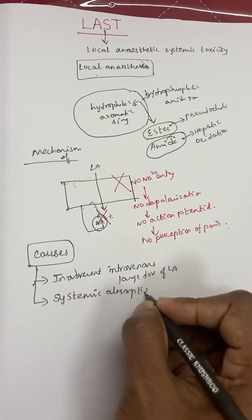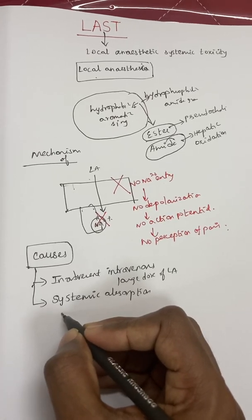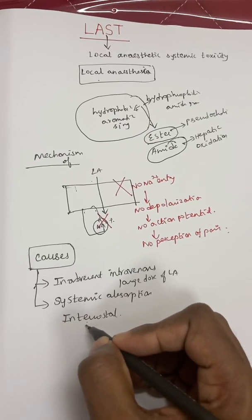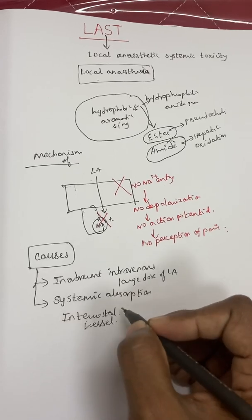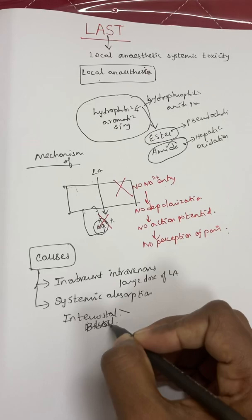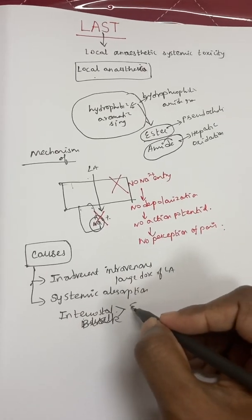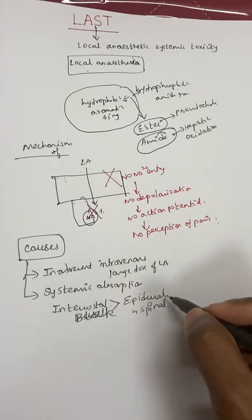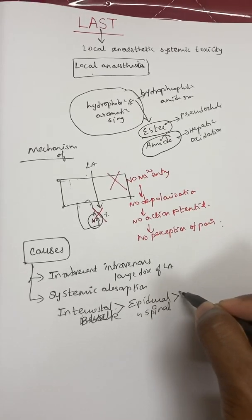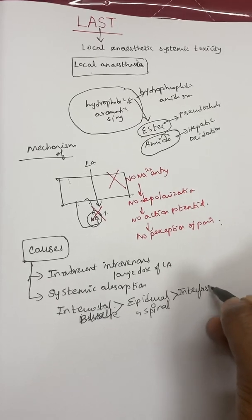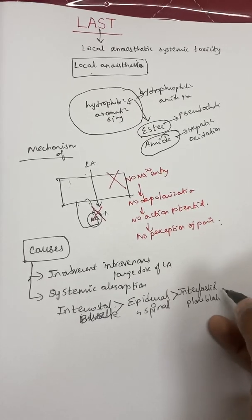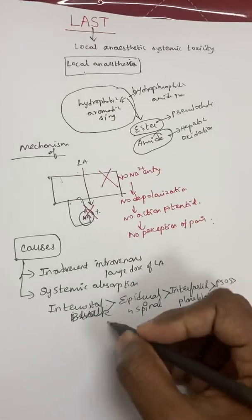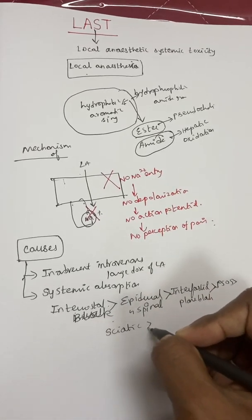Systemic absorption varies by block site. Intercostal blocks have the highest absorption because they are close to highly vascular intercostal vessels, so the risk of LAST is greatest there. Next is epidural and spinal, followed by interfascial plane blocks such as TAP block. After that is the psoas compartment block, then sciatic nerve block. The least absorption is seen with brachial plexus and upper limb blocks.